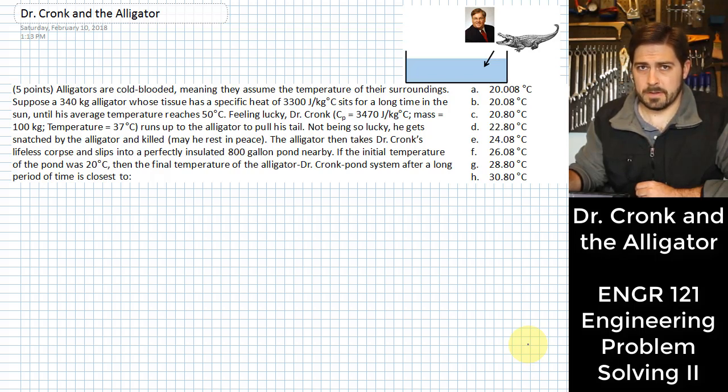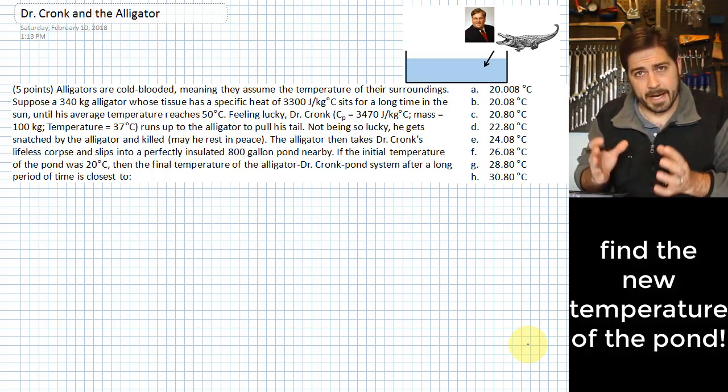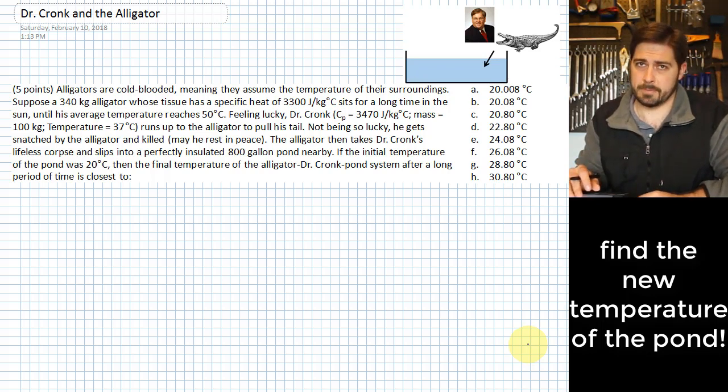Something terrible has happened. Dr. Kronk, in one of his many antics that he has been known to do, this time tried to run up and pull the tail of an alligator. Well, this alligator did not take kindly to that. He killed Dr. Kronk and pulled him into a pond. Now what we need to do is figure out how much did that alligator and Dr. Kronk change the temperature of that pond. So let's get started.